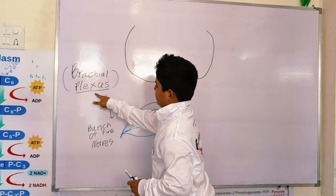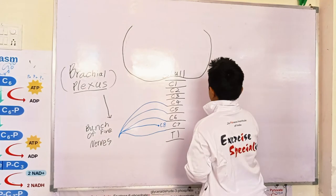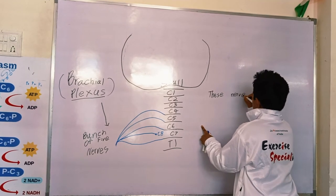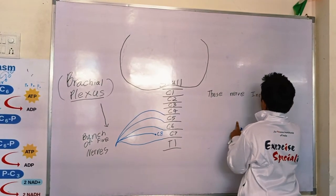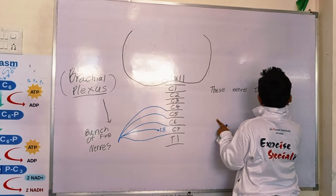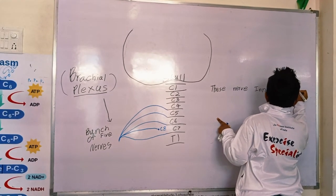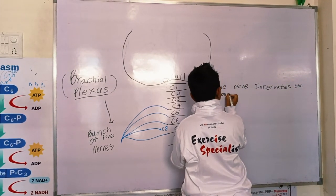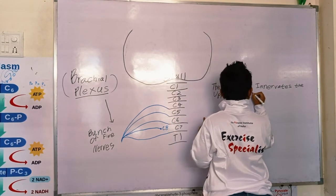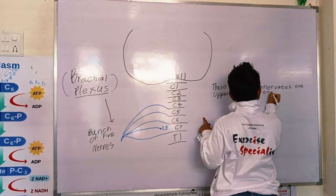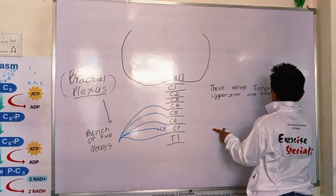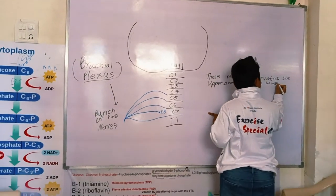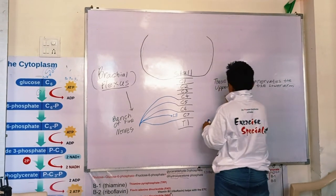This brachial plexus nerve innervates the upper arm and forearm muscles.